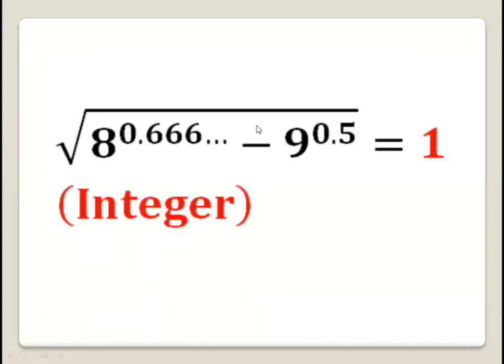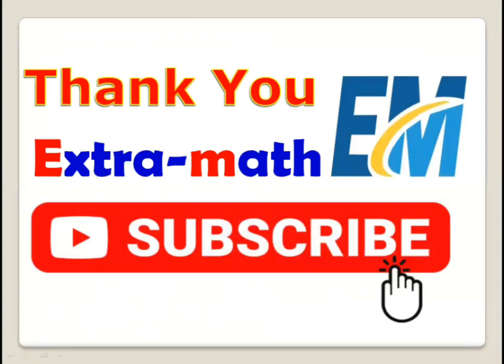Therefore, the number square root of 8 to the power 0.666 repeating, minus 9 to the power 0.5, equals 1, which is an integer. That's all for now. Thank you for watching.